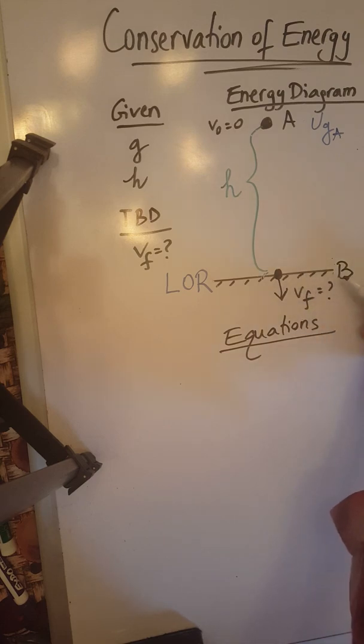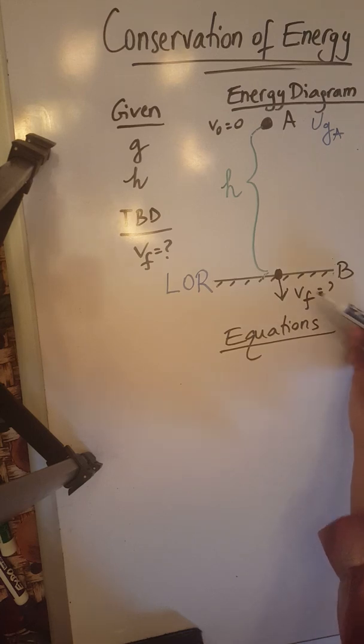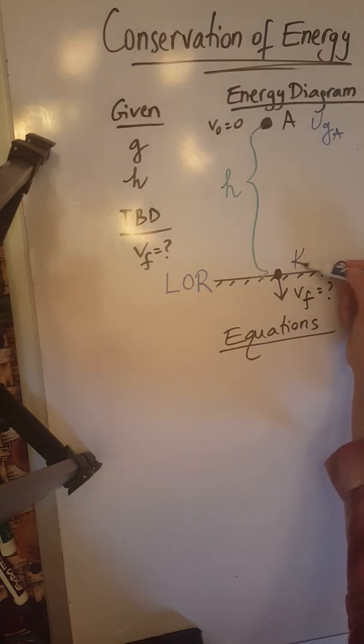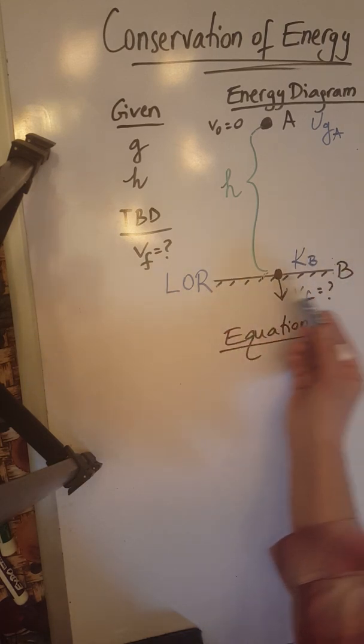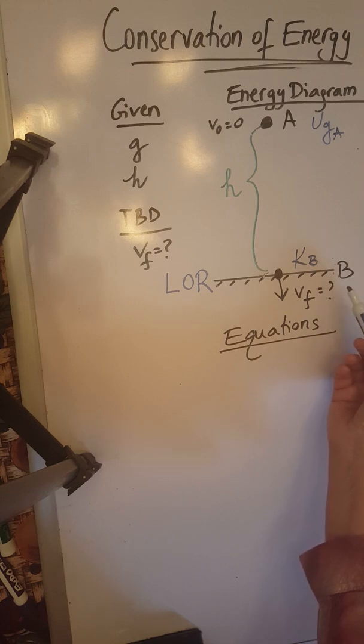At point B the object is in motion. That's exactly when it touches the ground before it stops. So therefore it will have kinetic energy. But because point B is on the level of reference there will not be any gravitational potential energy.